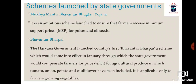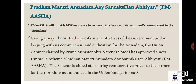Next is Bhavantar Bharpai. The Haryana government launched this scheme — the country's first Bhavantar Bharpai scheme — which would come into effect in January, under which the state government would compensate farmers for price deficits for agricultural produce including tomato, onion, potato, and cauliflower. It is applicable only to farmers growing vegetables. So while Mukhyamantri Bhavantar Bhugtan Yojana is based on pulses and oilseeds, Bhavantar Bharpai is based specifically on vegetables, and is an initiative of the Haryana government.